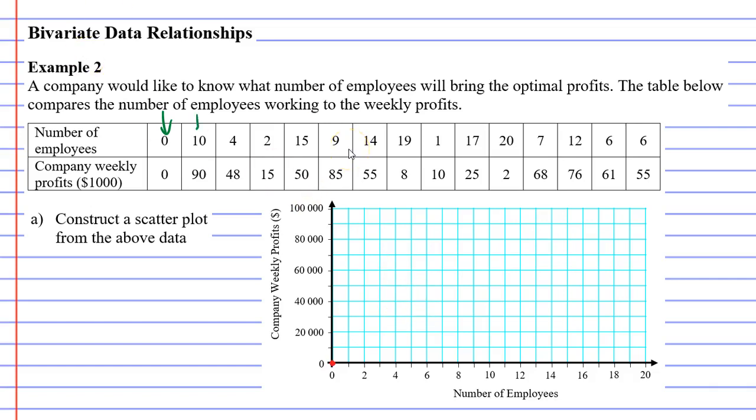Looking at the next column, when we have 10 employees we have a profit of $90,000 that will go right about here. Moving to the next column, when we have four employees we get a profit of $48,000, which would be roughly here.